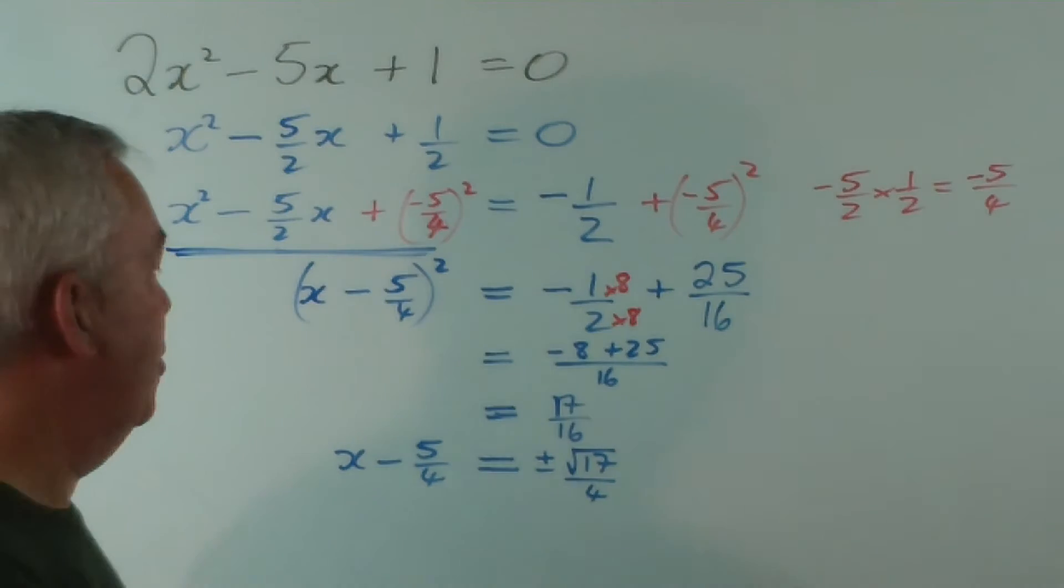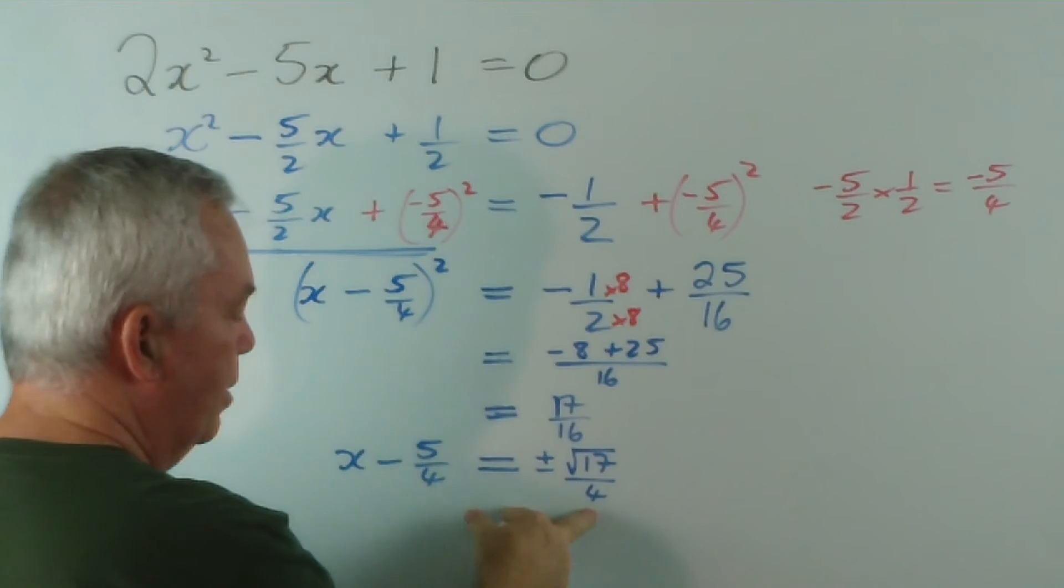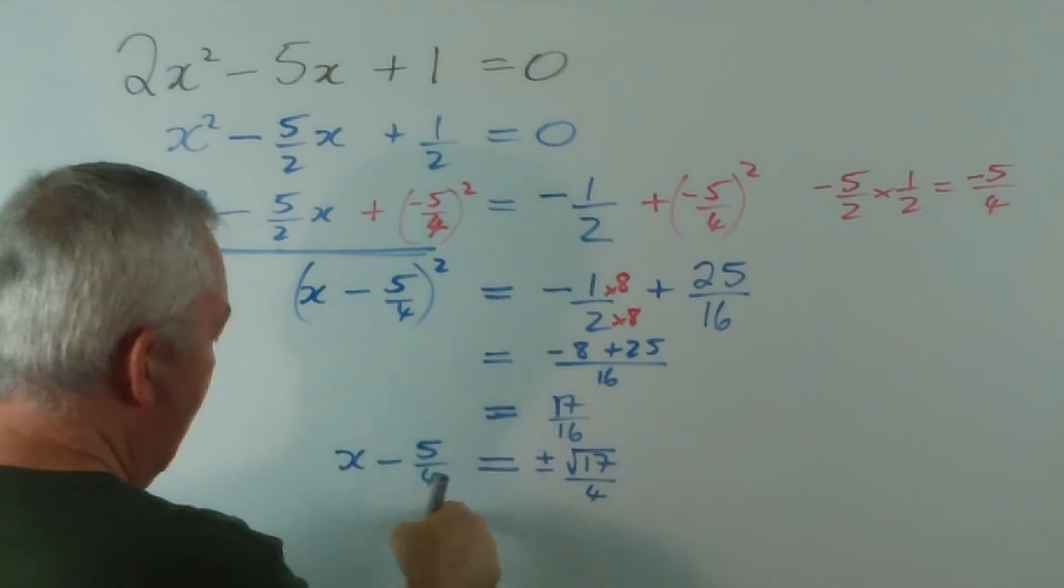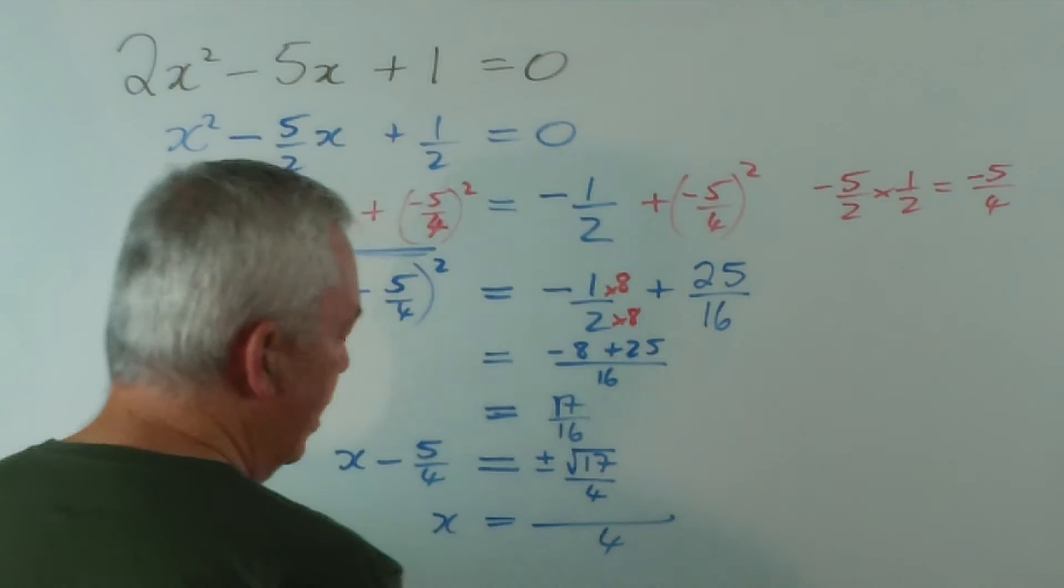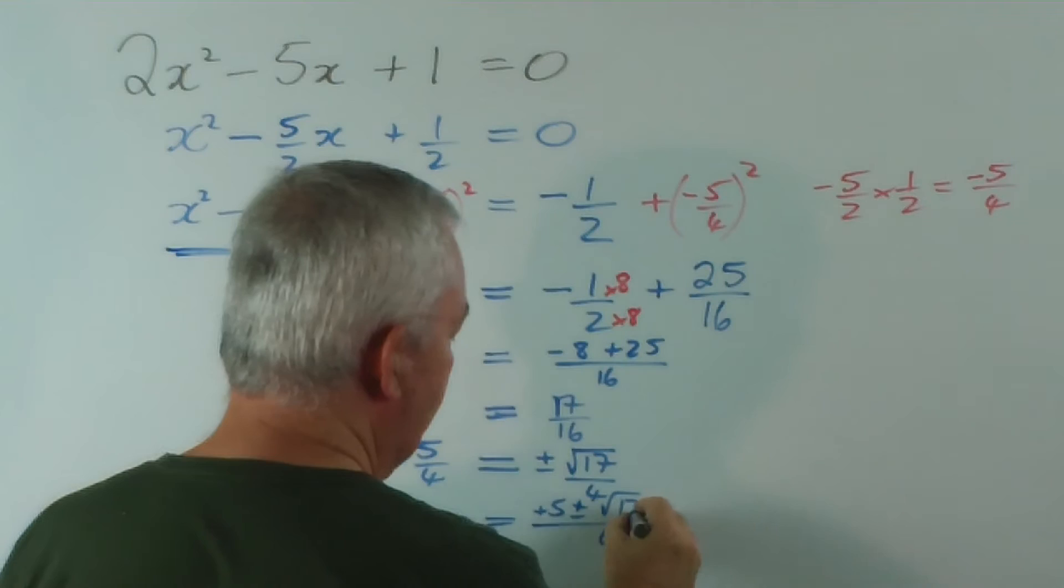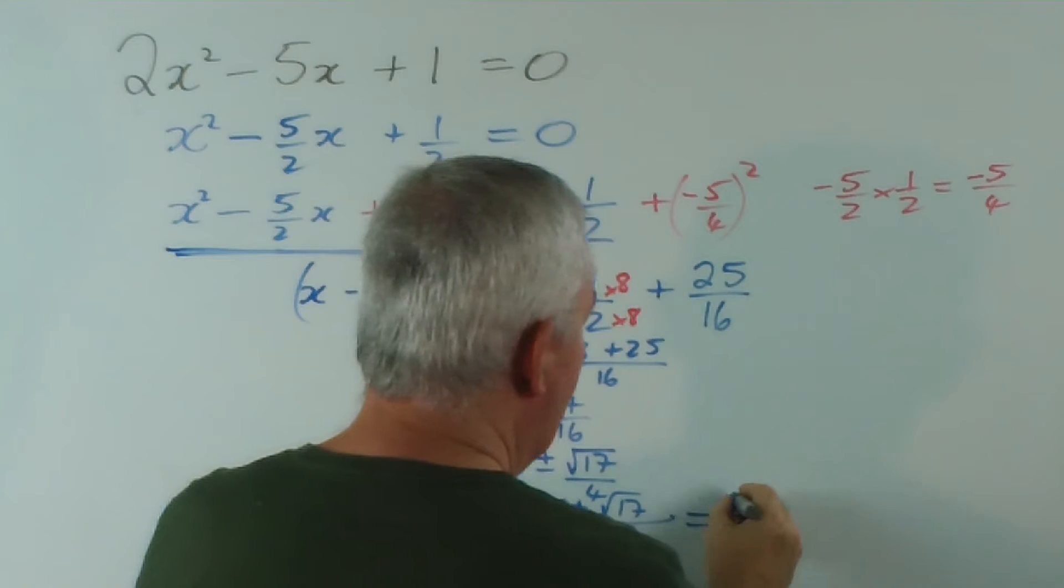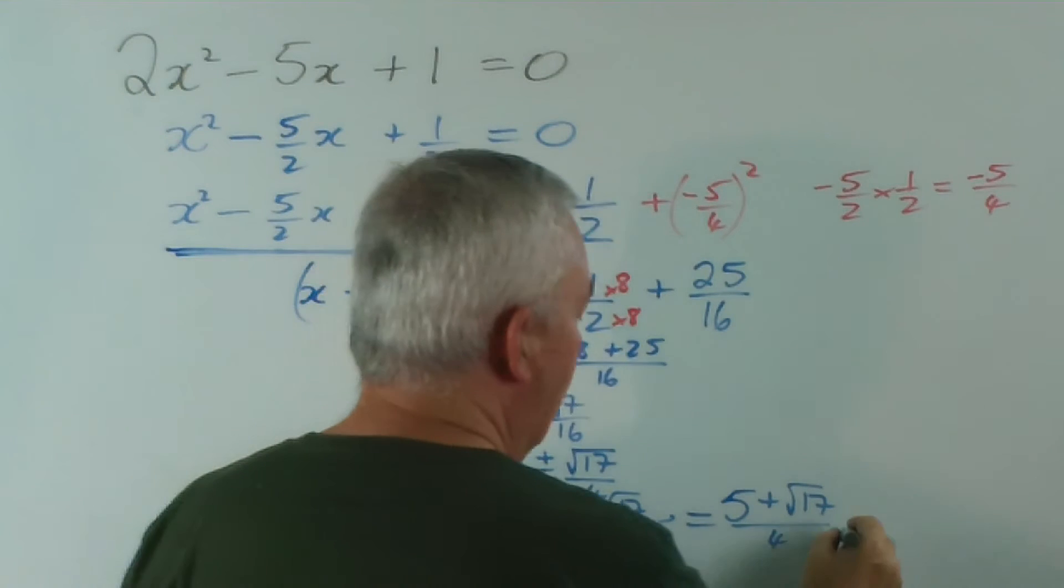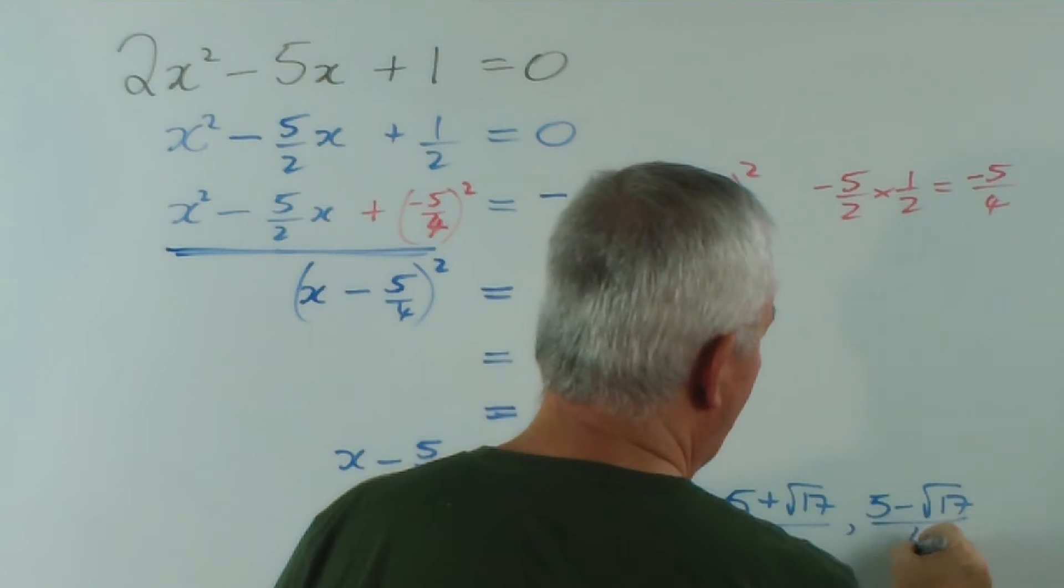Now this is why doing this as a fraction works so well, because the denominators will match up, and it makes it fairly easy to handle. Now if I add 5 on 4 to both sides, then everything's going to be on 4 on this side, and I've got a plus 5, plus or minus root 17. And I've run out of space, so I'm going to go across the bottom. One root is going to be at 5 plus root 17 on 4, and the other one's going to be at 5 minus root 17 on 4.